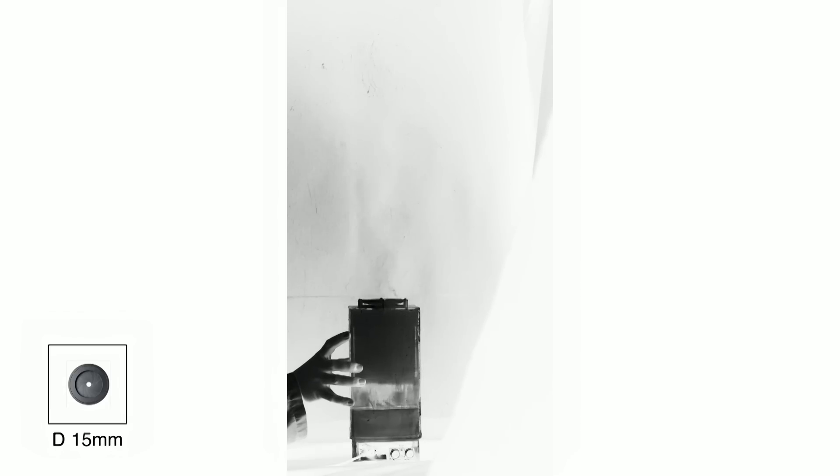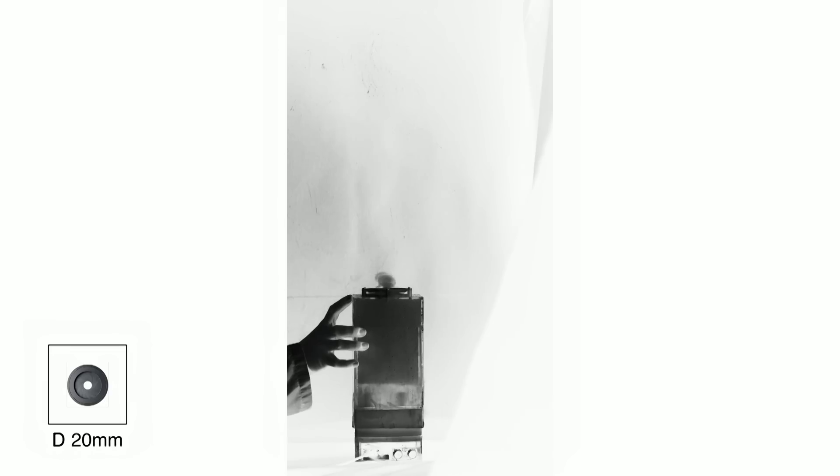This is a series of experiments testing different aperture sizes and the volumes that match them. In general, the larger the aperture size, you have to match the volume to the aperture size. As a result, the bigger the vortex ring is and the longer it travels.